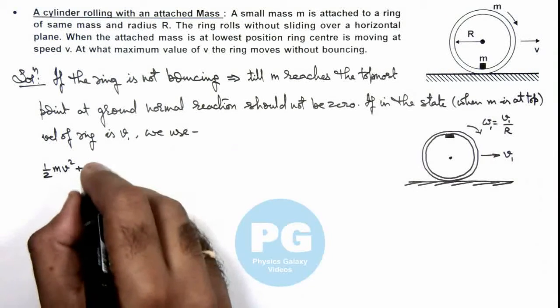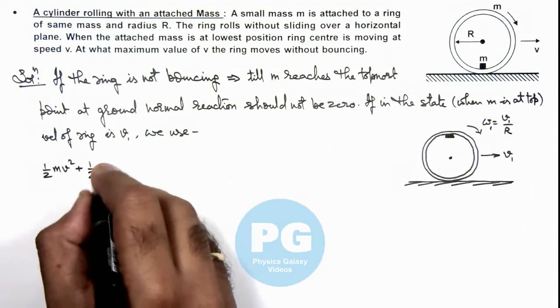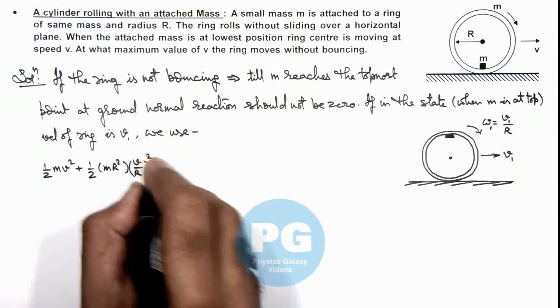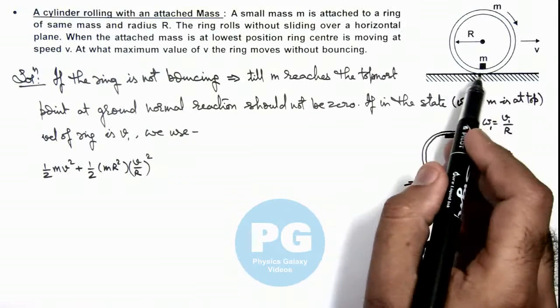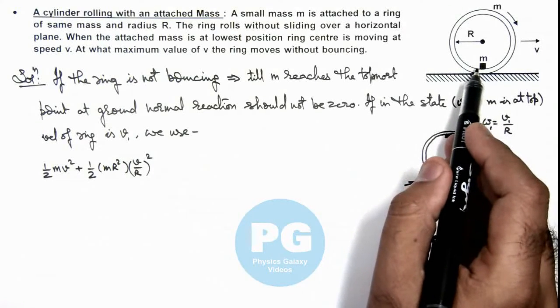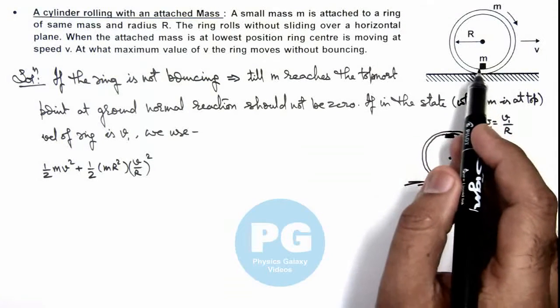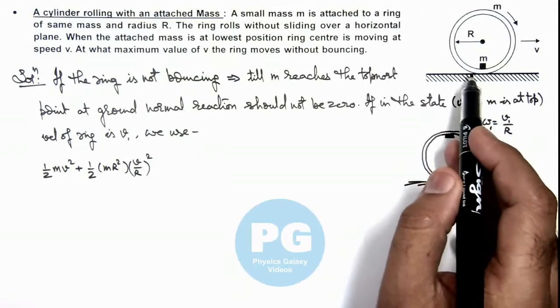Its rotational kinetic energy in the ring is half mR square multiplied by v by R whole square. We can ignore the kinetic energy in the bottom mass m, because it is at the bottom most point and in pure rolling we can say the bottom point is at rest.